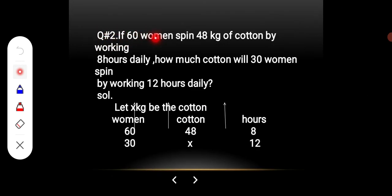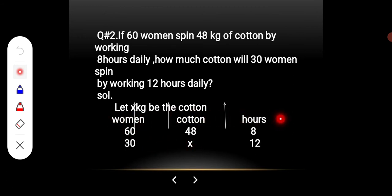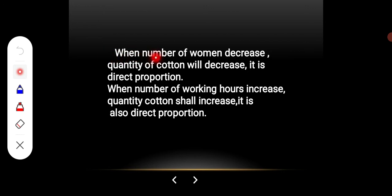Question No. 2: If 60 women spin 48 kg of cotton by working 8 hours daily, how much cotton will 30 women spin by working 12 hours daily? Let x kg be the cotton we find out. Women: 60 and 30; cotton: 48 and x; hours: 8 and 12. When the number of women decreases, the quantity of cotton will decrease — it is direct proportion.